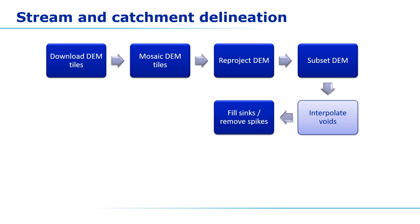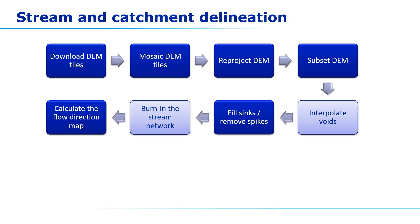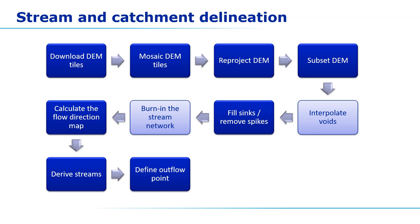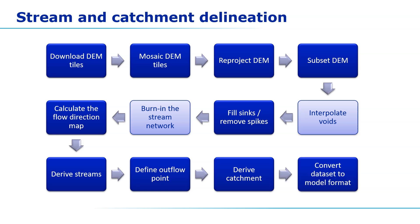We need to clip the DEM to a smaller area, interpolate voids, and very importantly fill the sinks. We can also burn the stream network — if there's one available — to force the water to follow the hydrography in a more realistic way. Then we calculate the flow direction, derive the streams, define the outflow point, and derive the catchment of that outflow point.